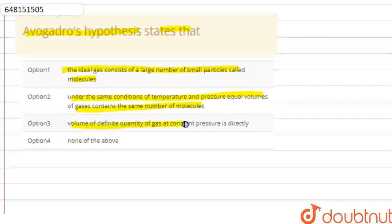Volume of definite quantity of gas at constant pressure is directly... none of the above. So, let us try to understand Avogadro's hypothesis.